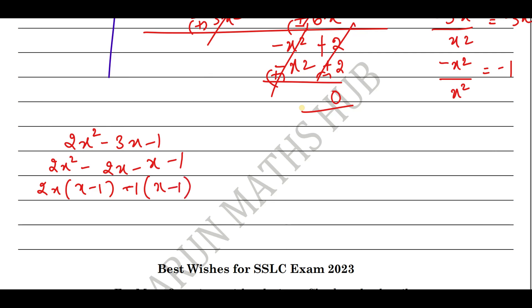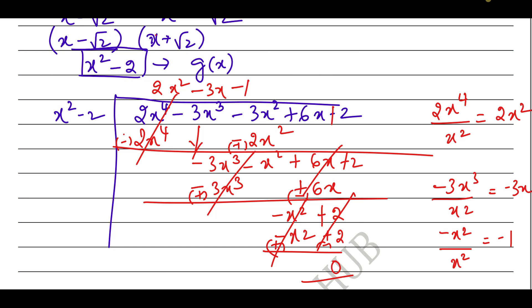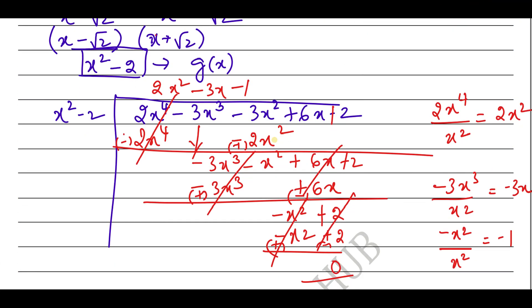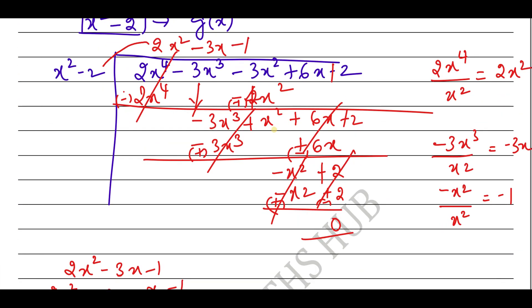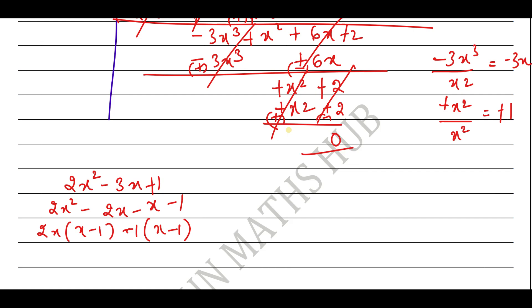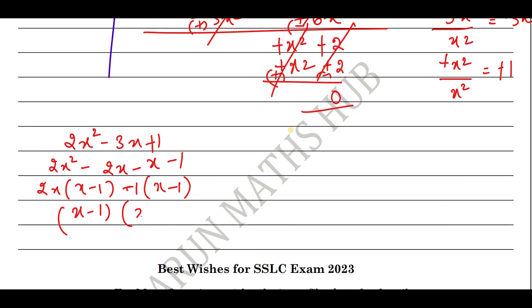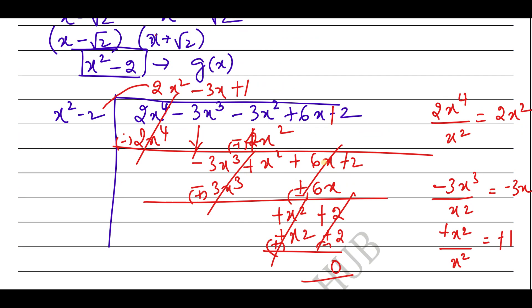Continuing the division, the quotient Q(x) = 2x² − 3x + 1. Factorizing: you get (x − 1)(2x − 1). So the other two zeros are x = 1 and x = 1/2. You should be very careful in solving these kinds of questions. The four zeros are √2, −√2, 1, and 1/2.